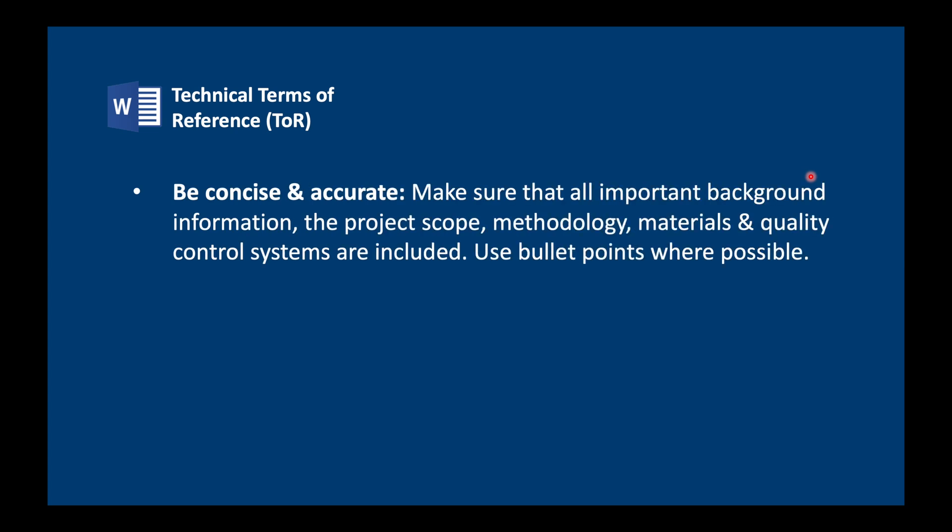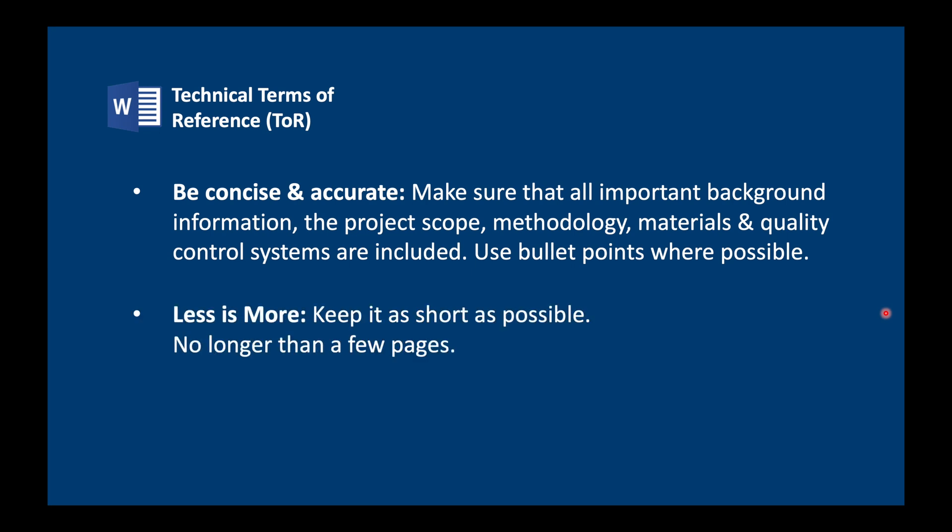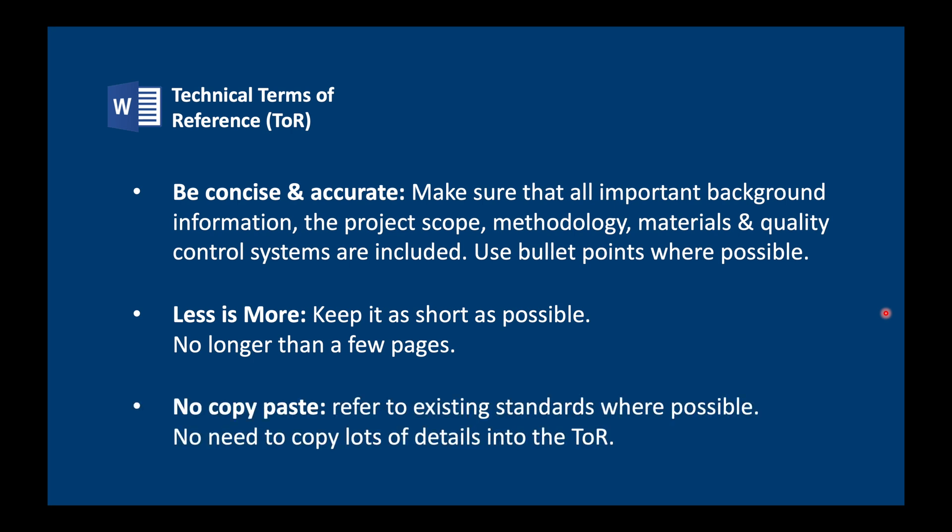Here are some general remarks. Be as concise and accurate as you can. Make sure that all important background information is included — project scope, methodology, materials, quality control systems and so on. Use bullet points where possible. Less is more, as I often say — keep it as short as possible, preferably no longer than a few pages. Don't copy-paste. Refer to existing standards wherever possible; you don't need lots of detail in the TOR if you can point to an existing standard.